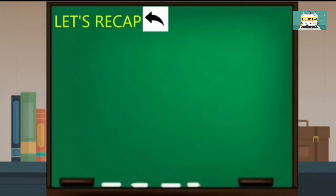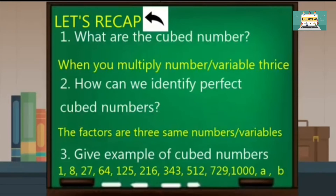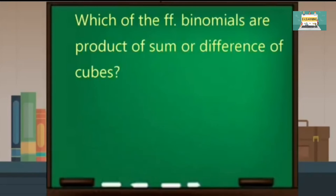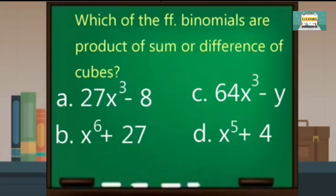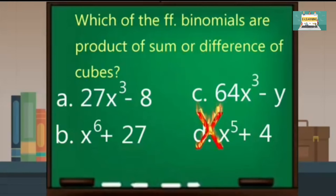Before we start with the third lesson, let us answer the three questions posted. Okay, time is up. Let us check now your work. Are you correct with your answer? Which of the following binomials are products of sum and difference of cube? A, B, and C are products of sum and difference of two cubes, except D. To know whether it is a product of sum and difference of two cubes, you will notice that the first and the last term are perfect cubes, whether it is a sum or difference. Except for letter D, because x to the fifth is not a perfect cube.